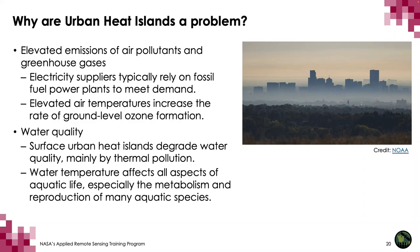Companies that supply electricity typically rely on fossil fuel power plants to meet much of the demand, leading to increased air pollution and greenhouse gas emissions. Elevated temperatures can also directly increase the rate of ground-level ozone formation — ozone forms when nitrogen oxides and volatile organic compounds react in the presence of sunlight and hot weather. High temperatures of pavement and rooftop surfaces can heat up stormwater runoff, which drains into storm sewers, raises water temperatures, and is released into streams, rivers, ponds, and lakes. Rapid temperature changes in aquatic ecosystems resulting from warm stormwater runoff can be particularly stressful and even fatal to aquatic life.